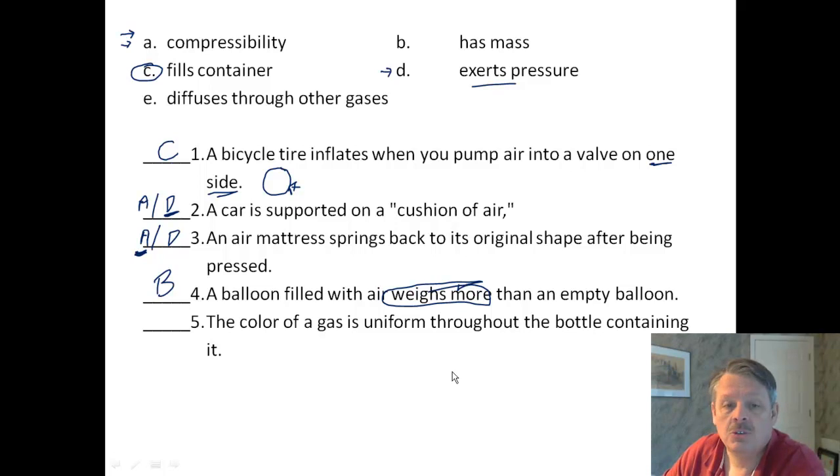The color of a gas is uniform throughout the bottle containing it. So if we had, let's say, bromine gas, which is kind of a brownish yellowish color, it would be the same color throughout the entire container. That would be that the color diffuses through other colors, so it would be E.